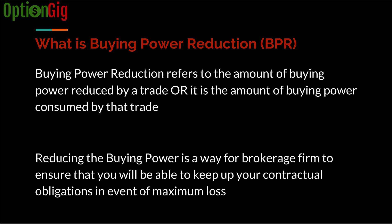Why would brokers reduce the buying power? By reducing the buying power, brokers are setting aside money so that you can fulfill your contractual obligations in the event the trade goes completely against you. For example, if you sold a put option on a stock at a strike price of $50 for one contract, the broker could reduce $5,000 from your buying power so that if the stock goes to zero you can be put the stock at $50 — buying 100 shares. The broker sets aside $5,000 so you can fulfill your contractual obligation. Buying power reduction gives brokers a way to protect themselves in case of eventual loss.